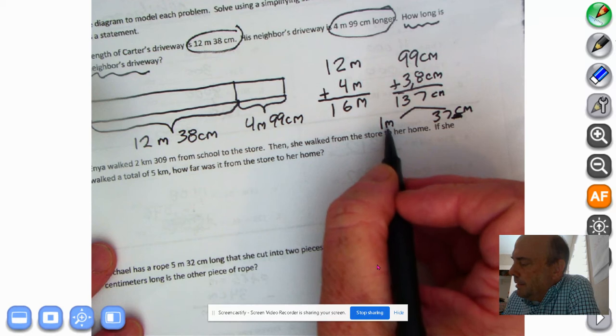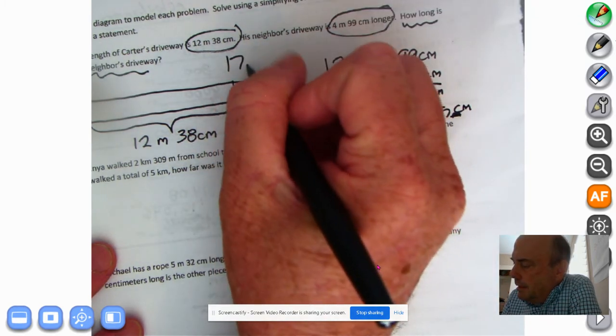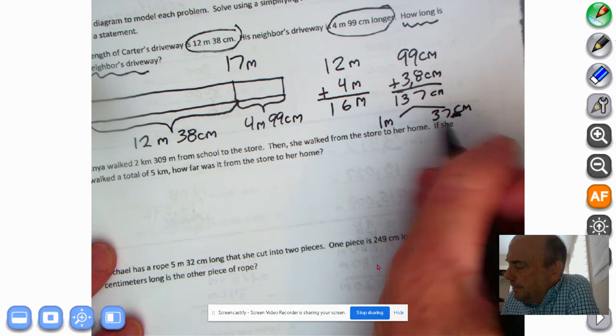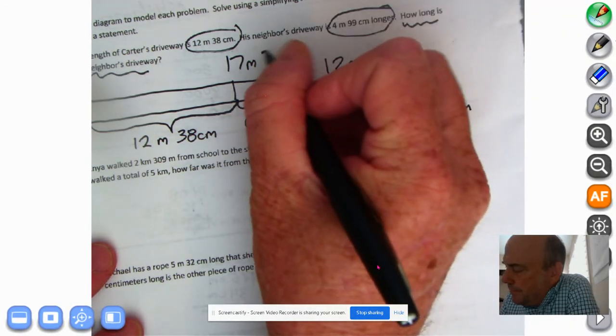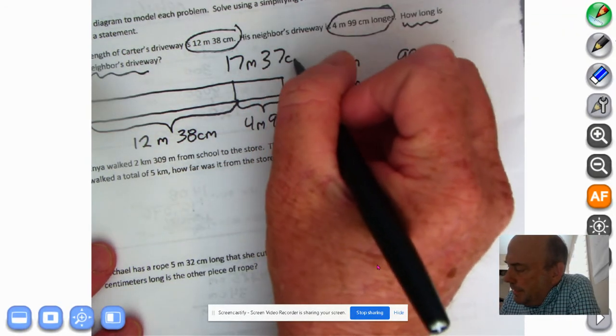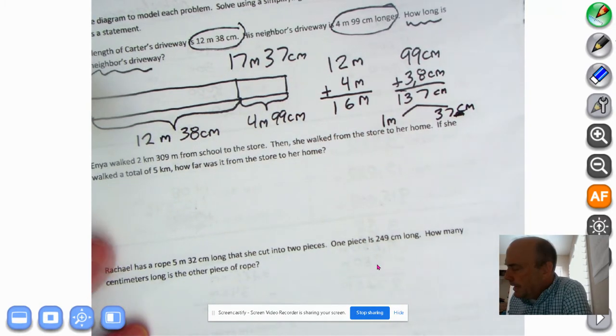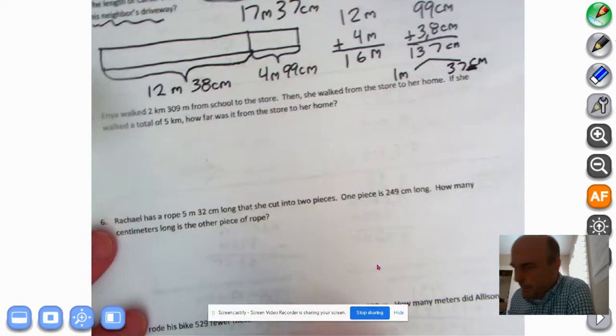So you have 1 meter plus 16. That's 17 meters. And we have 37 centimeters left over. So the neighbor's driveway is 17 meters, 37 centimeters. And I'm not going to have us write a sentence because there's not enough room here to do that.